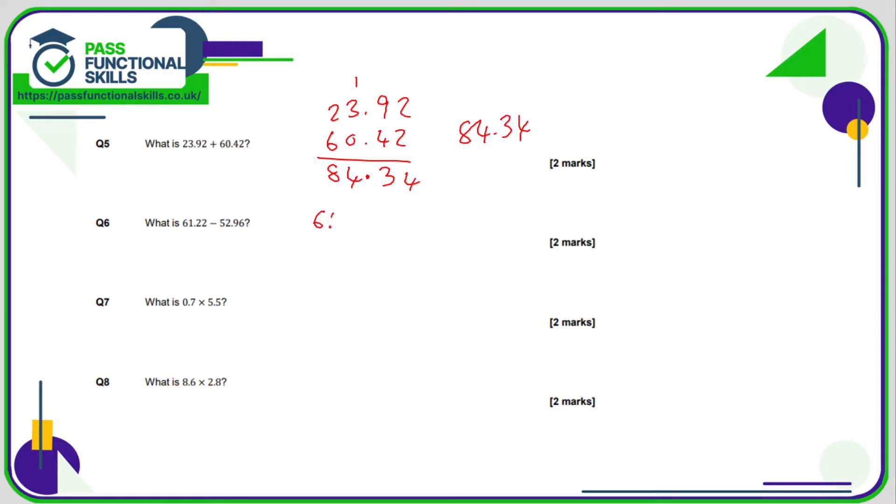Question number six, 61.22 take away 52.96. Again, let's keep the decimal point in line and another decimal point in the answer box. 2 take away 6 can't be done, so we'll borrow from the next column. 2 becomes 1, 12 becomes 6. 12 minus 6 is 6. 1 minus 9 can't be done, so 1 becomes 0, and this 1 becomes an 11. 11 minus 9 is 2. 0 minus 2 can't be done, so the 6 becomes a 5, the 0 becomes a 10. 10 minus 2 is 8. 5 minus 5 is 0. So the answer is 8.26.